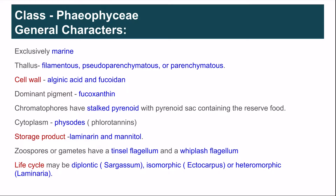The dominant pigment is fucoxanthin, which imparts brown color to the thallus. Other important photosynthetic pigments are chlorophyll A, chlorophyll C, and carotenoids. The chromatophores or chloroplasts have a stalked pyrenoid, and the pyrenoid has a pyrenoid sac which contains the reserve food. The cytoplasm has certain vacuoles known as physodes, which contain fluorotannins.